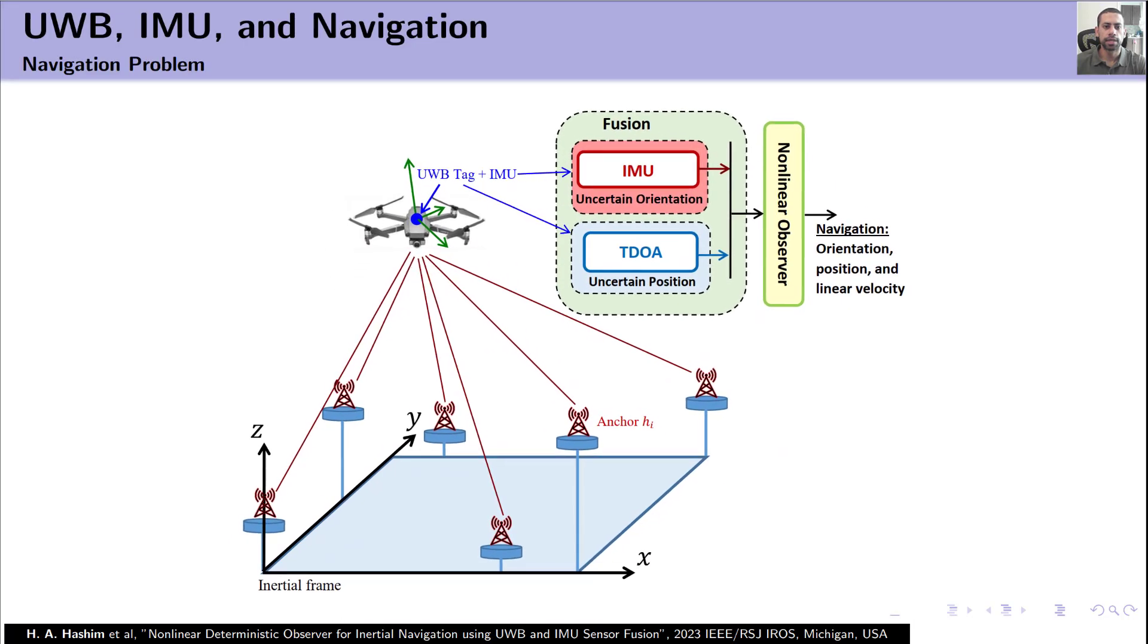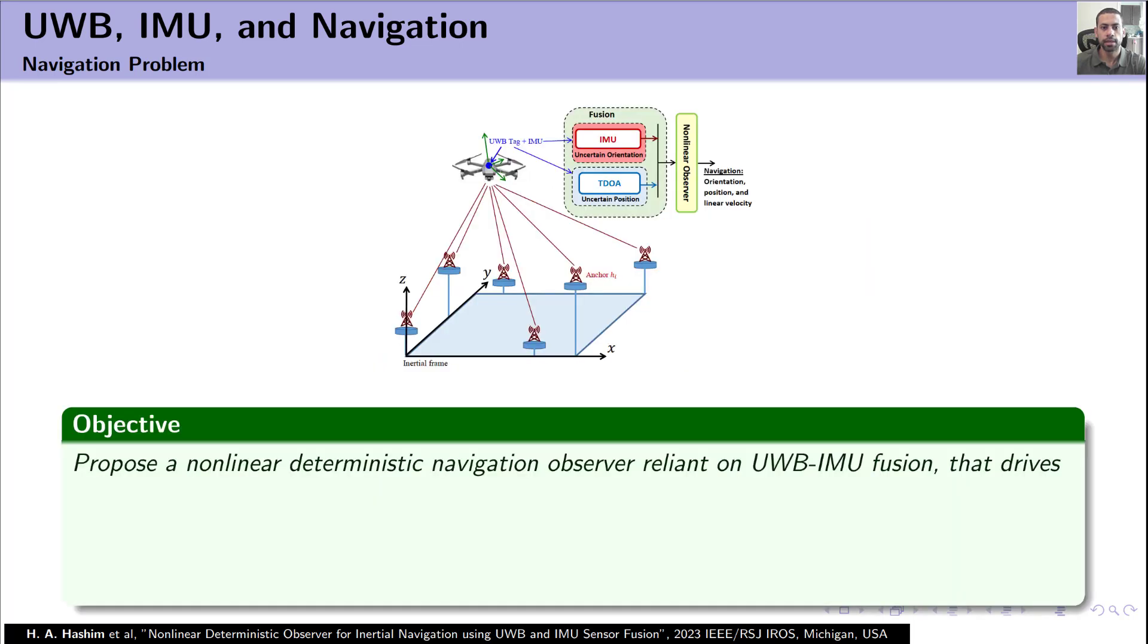This figure illustrates the navigation problem. We have a UAV that is equipped with UWB tag as well as IMU and flies between UWB anchors. The objective is to forward IMU and the time difference of arrival measurements into an observer. Next, the observer will provide UAV orientation, position, and linear velocity estimates such that the main objective is R hat goes to the true R, true orientation of the vehicle, the estimate P hat goes to the true position P, and the estimate V hat goes to the true linear velocity V.